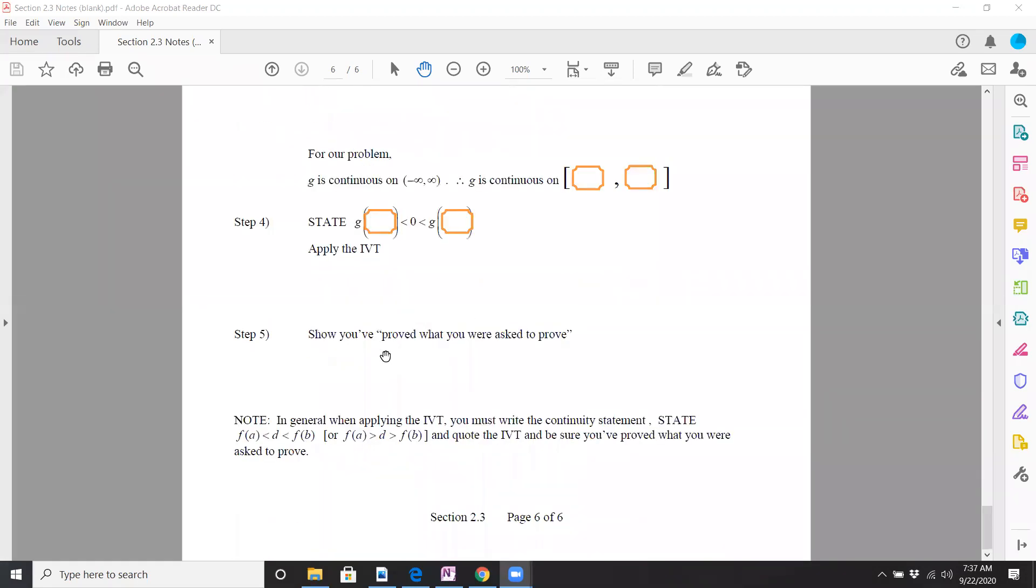In general, when applying IVT, you must write the continuity statement, state these intervals here, or state what f of a was and what f of b was, and then quote it. So it's those three things. Again, you got to tell me about continuity. You got to tell me about what your f of a and f of b values are and you got to quote it. So that's that. Another chance to do homework.